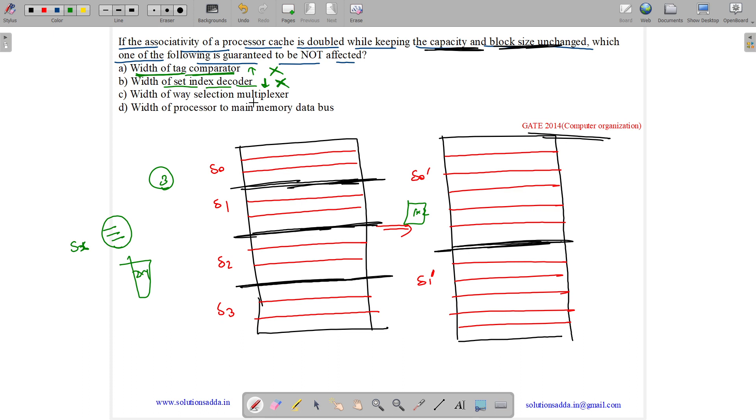Width of ways selection multiplexer. Here see, here we have three possibilities. So we have three ways to choose from. But here we have six ways to choose from. So way selection multiplexer will have more width in this. We will need a larger way selection multiplexer. So its width will increase. So it will get affected, thus this is false.